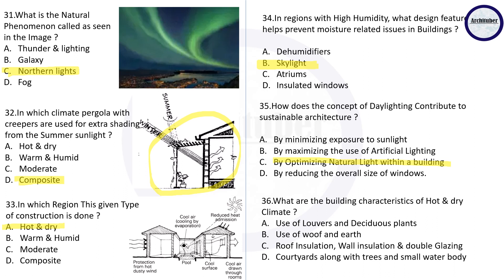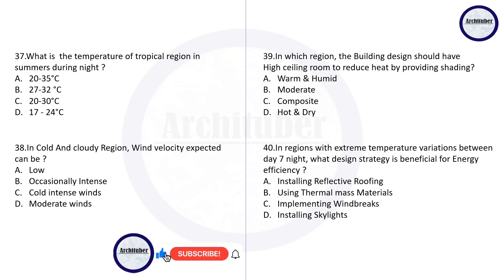Question thirty-six: what are the building characteristics of a hot and dry climate? Courtyards along with trees and small water features are the building considerations for hot and dry weather. Question thirty-seven: what is the temperature of a tropical region in summers during the night? The correct answer is 20 to 30 degrees. Question thirty-eight: in a cold and cloudy region, what wind velocity is expected — low occasionally intense cold winds, intense winds, or moderate winds? The answer is cold intense winds.